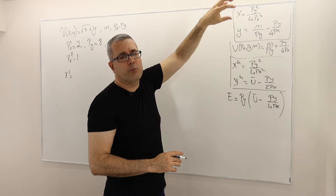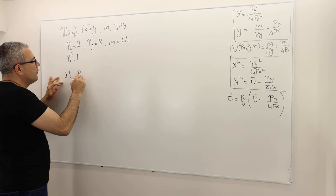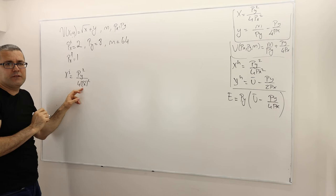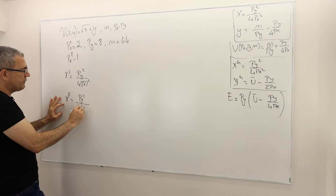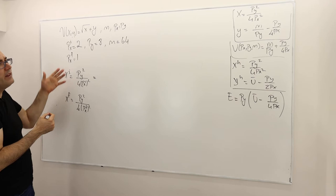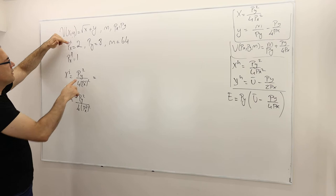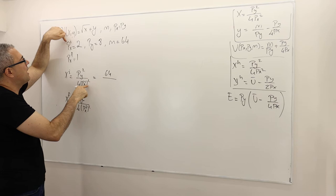According to Marshallian demands, X always equals PY squared divided by 4 times PX squared. So the initial good X is PY² divided by 4·PX_I². The final good X is PY² divided by 4·PX_F². Note that none of those depend on income, so the income of 64 is not going to appear anywhere. PY² is 64, divided by 4 times PX_I² which is 4×4=16.